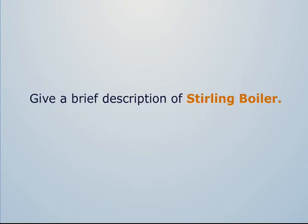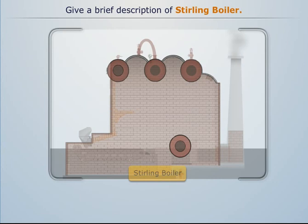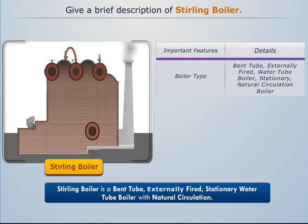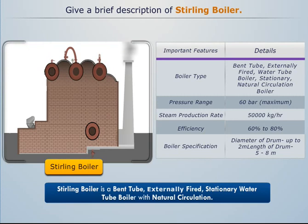Sterling boiler is a bent tube, externally fired, stationary water tube boiler with natural circulation. Its pressure range, steam production rate, efficiency and specifications are noted. Now let's try to understand its construction and working.